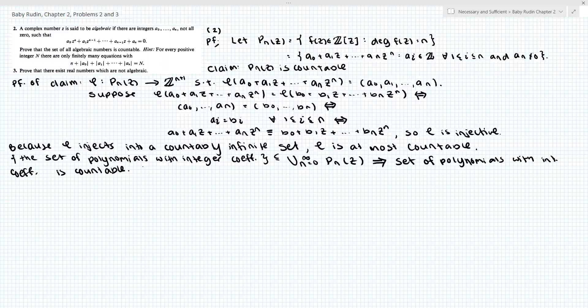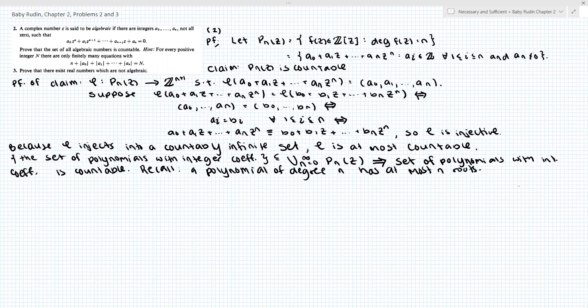Okay, so next we're going to recall the following fact. Recall, a polynomial of degree n has at most n roots. And of course, over the complex numbers, it has exactly n roots. But for this problem, we can just say degree n has at most n roots.